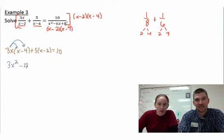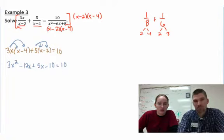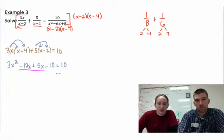So 3x times x minus 4, negative 12x. Distribute the 5 here and it's going to be 5x minus 10. Excuse me, mega millions on the brain. So we've got like terms over here on this side. And let's go ahead and add 10, shall we? We shall indeed.